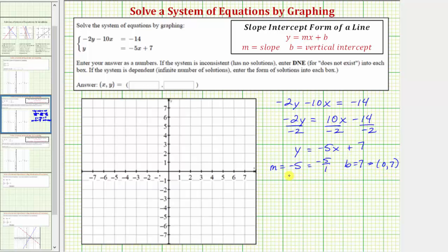This is all we need in order to graph the line. We'll first plot the vertical intercept, 0, 7. And then because the slope is negative 5 over positive 1, from the vertical intercept we go down 5 units because the vertical change is negative 5, and then right 1 unit because the horizontal change is positive 1. Let's go ahead and do that again. Down 5, right 1. And now let's go ahead and graph the line. This is the graph of the first linear equation.